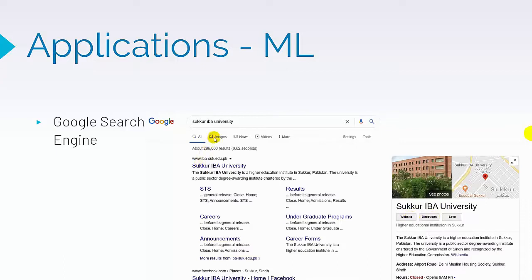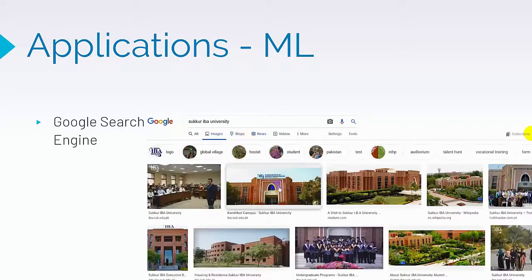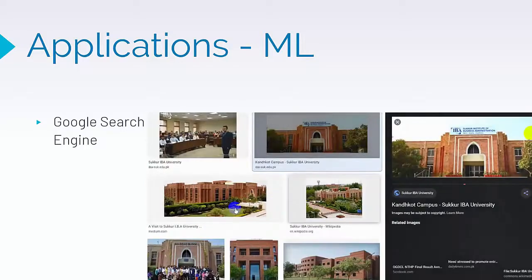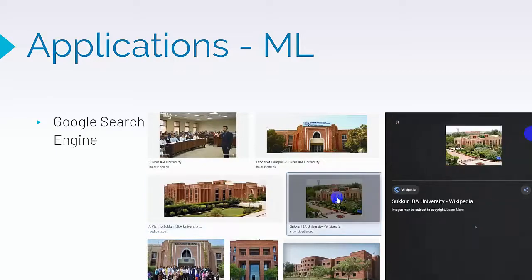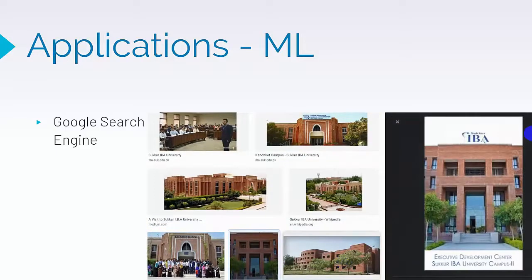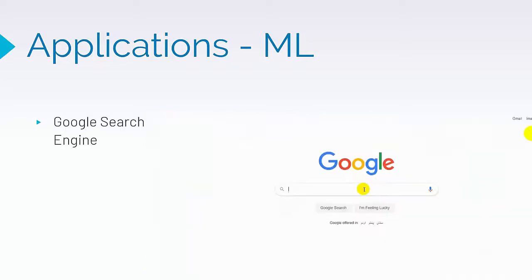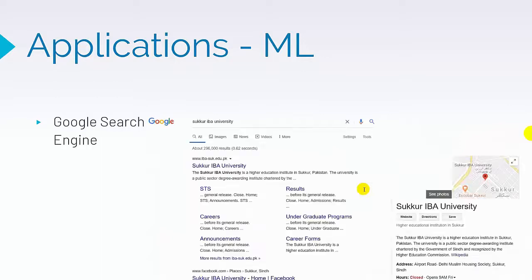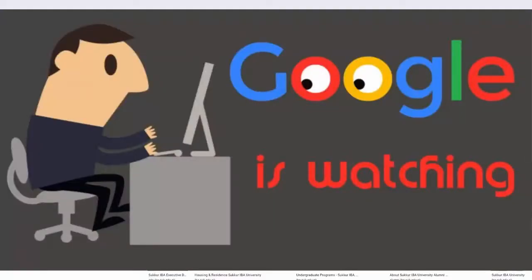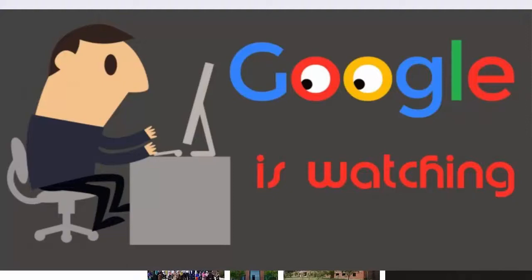Every time you use Google Search you are using a system that has many machine learning components at its core — from interpreting the text of your query to adjusting results based on your personal interests. It will almost always give you the most relevant links first. While searching for a university it gives its website first, which is what you wanted to visit. Google knows many things about people — even things about ourselves that we may not know.